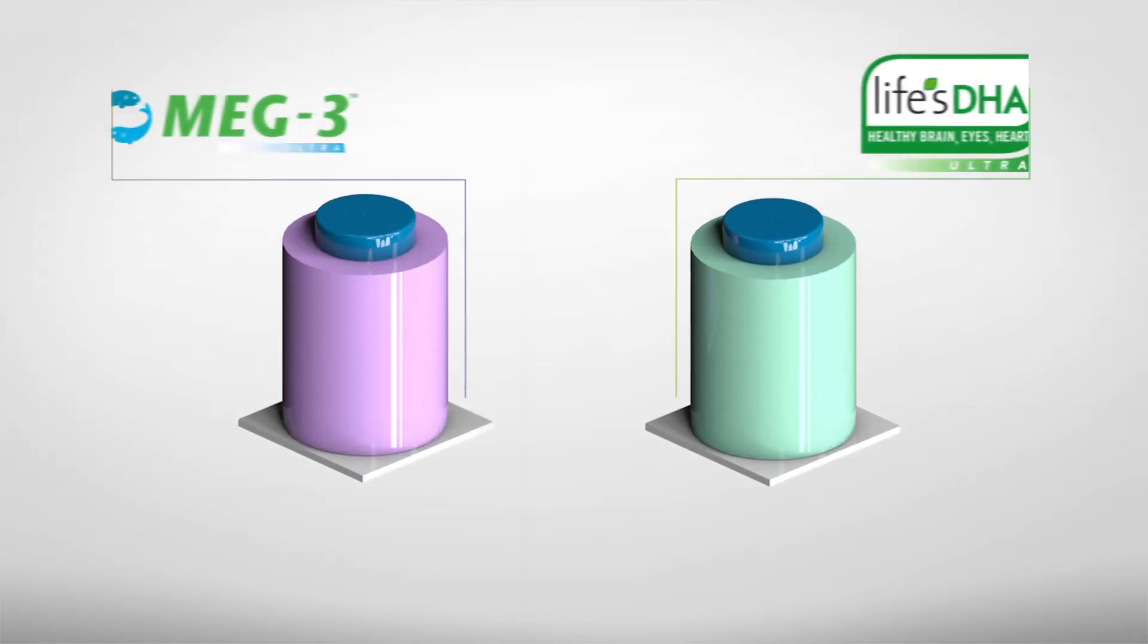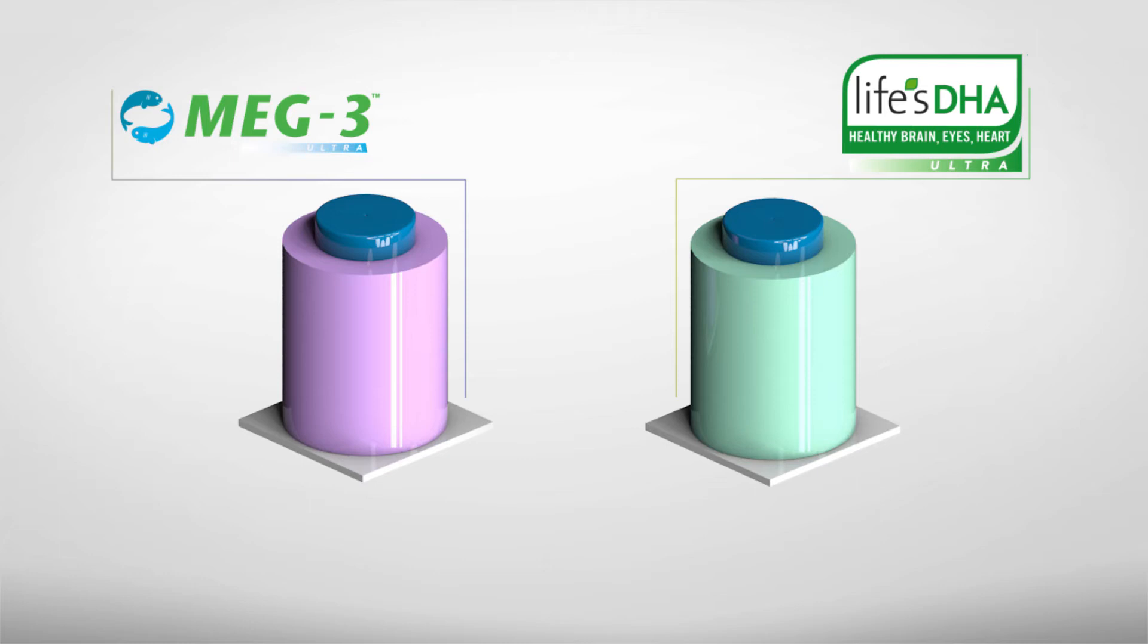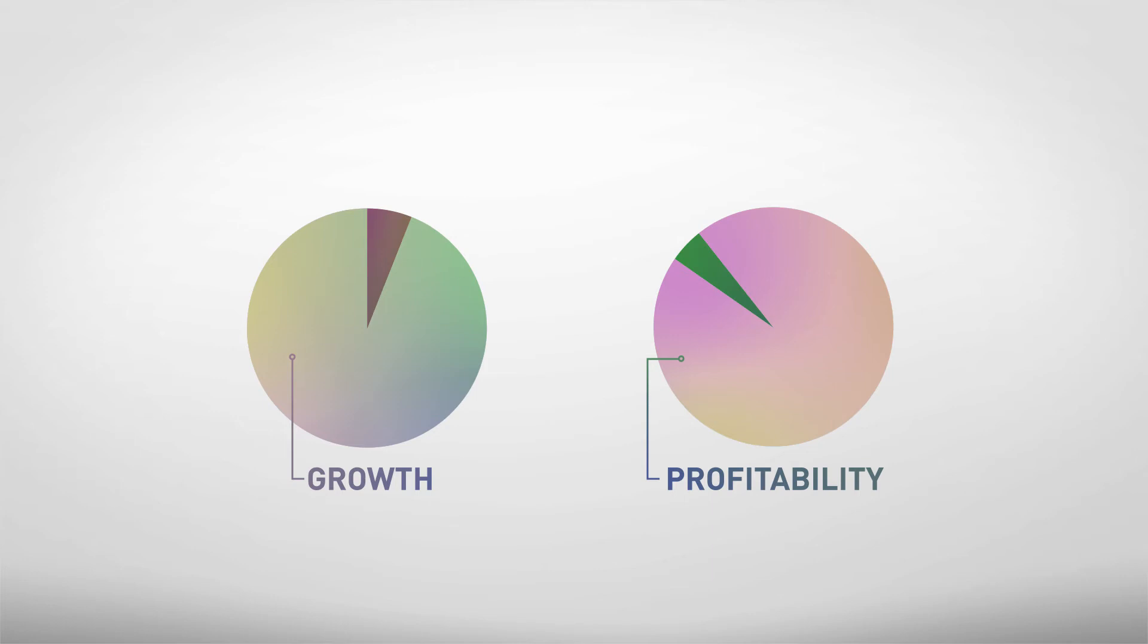3C technology has enabled us to create next-generation product lines: MEG3 Ultra and LIFE's DHA Ultra. Here's how these products will help restore growth and profitability in the omega-3 category.